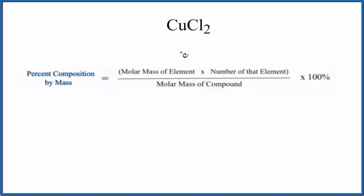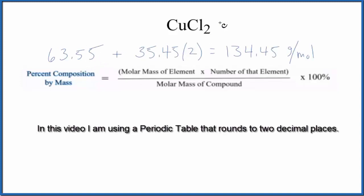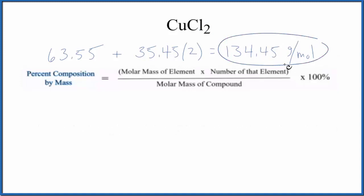When we do that, it'll look like this. So we found these values on the periodic table, and we included the subscripts here. So the molar mass for CuCl2, that's this 134.45, and the units are grams per mole.